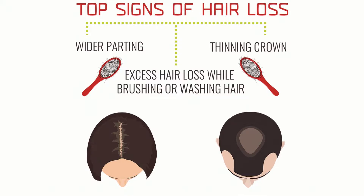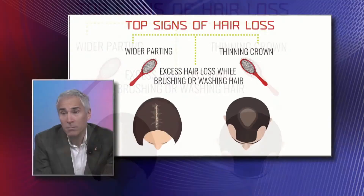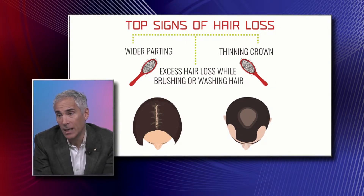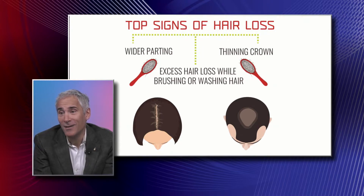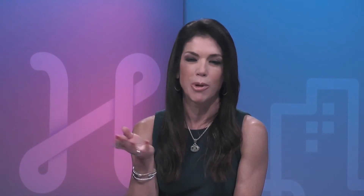Let's take a look at this and show our viewers what we're looking at. On the left side, which is the woman, you can see a wider parting — that's classic for women. On the right side, you see the crown area and also the deep frontal temporal recessions on the male.